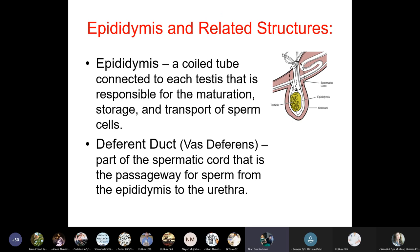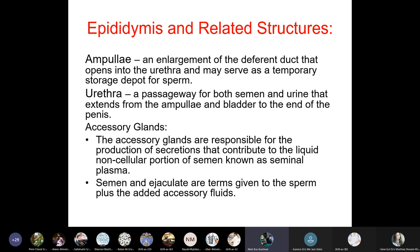The epididymis is connected to each testis and is responsible for maturation, storage, and transport of sperm cells. The vas deferens, part of the spermatic cord, is the passage for sperm from the epididymis to the urethra. The ampulla is an enlargement of the vas deferens that opens into the urethra and may serve as temporary storage for sperm. The urethra is a passage for both semen and urine, extending from the ampulla and bladder to the end of the penis.